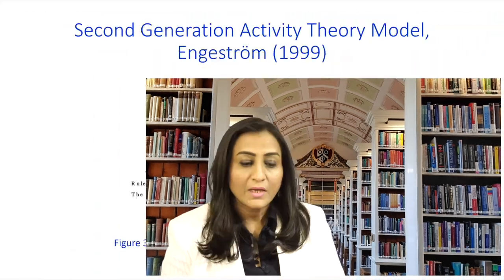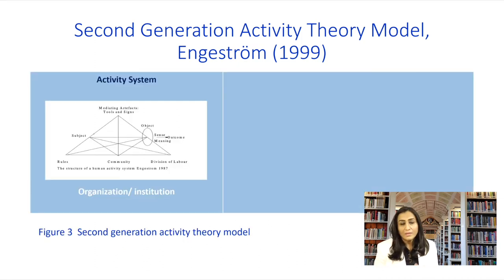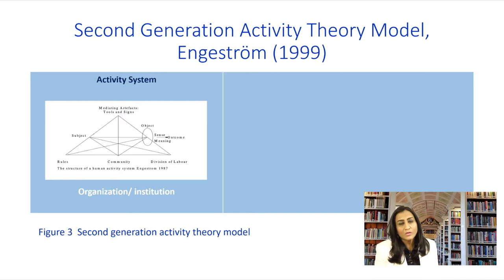Although Leontiev implies the components of division of labor, community, and rules in the activity that takes place, he did not provide any structure for the activity system. That is where second generation Activity Theory comes in. It provides the generic model of second generation Activity Theory. Let's understand this model by going through its different components, starting with the activity system. An activity system refers to organizations or institutions that have long histories, have taken shape and transformed over a lengthy period of time, and whose problems or potentials for change can be understood against their own history.